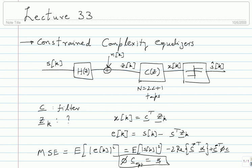Solving Φ c_opt = α gives the best possible filter that minimizes the MSE at the slicer input. The constraint complexity equalizer is a simple, straightforward situation. This solves most of the problems we had, except that you still need to know Φ and α, which requires knowing the channel h(z). So: what if you don't know the channel? For that we need an adaptive equalizer - one that adapts according to the MSE calculated at the receiver, with c changing over time.